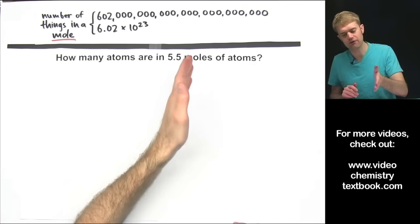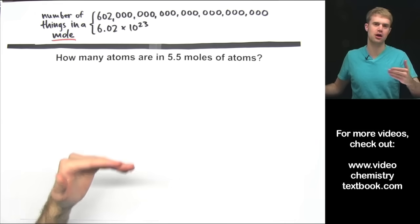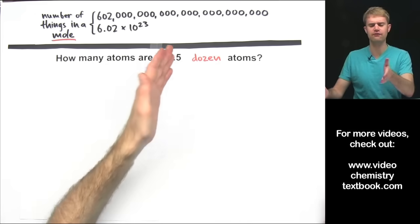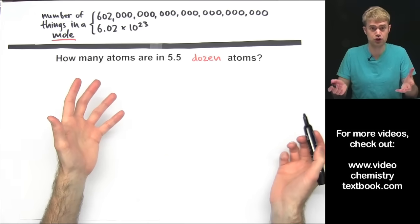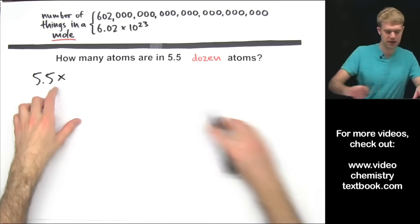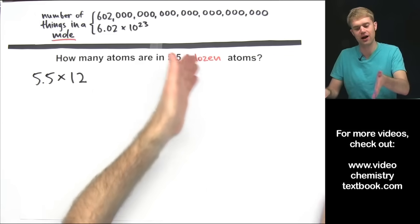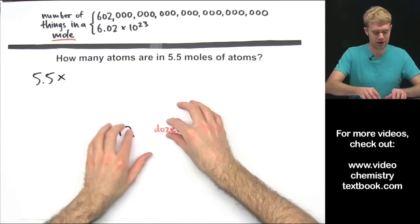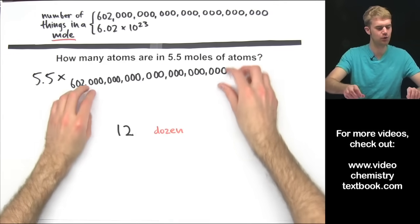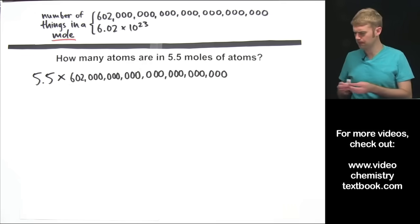We want to know how many atoms are in 5.5 moles of atoms, but to get a handle on how to think through this, let's first think about how we would do this if we're talking about dozens instead of moles. What if instead of 5.5 moles we're talking about 5.5 dozen? There are 12 things in a dozen, so we'd take 5.5 and multiply it by 12. But we're talking about moles, so instead of multiplying by 12, we're going to take 5.5 and multiply it by 602 hexillion — the number of things in one mole.